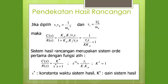Sistem order pertama tersebut dapat dinyatakan sebagai K* / (TO*·s + 1), di mana nilai K* = 1, dan nilai TO* = TOI / (K × KP). Nilai TO* dan K* merupakan konstanta waktu sistem hasil dan gain sistem hasil.